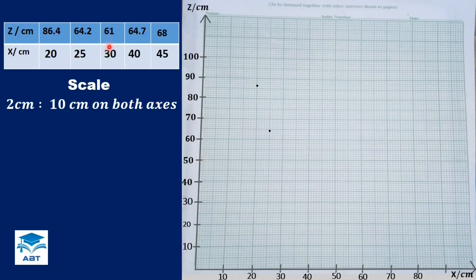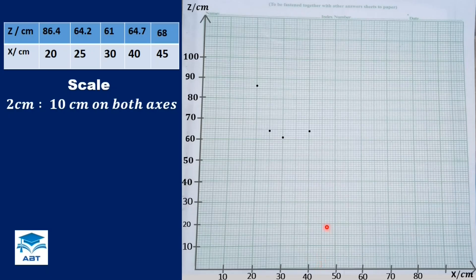The next one is 30 on the X axis and 61 on the Z axis. The next one is 40 and 64.7: we have 40 on the X axis, this is 60, we count 4 and move into the next box. The next one is 45 on the X axis and 68 on the Z axis, and we have the point there.